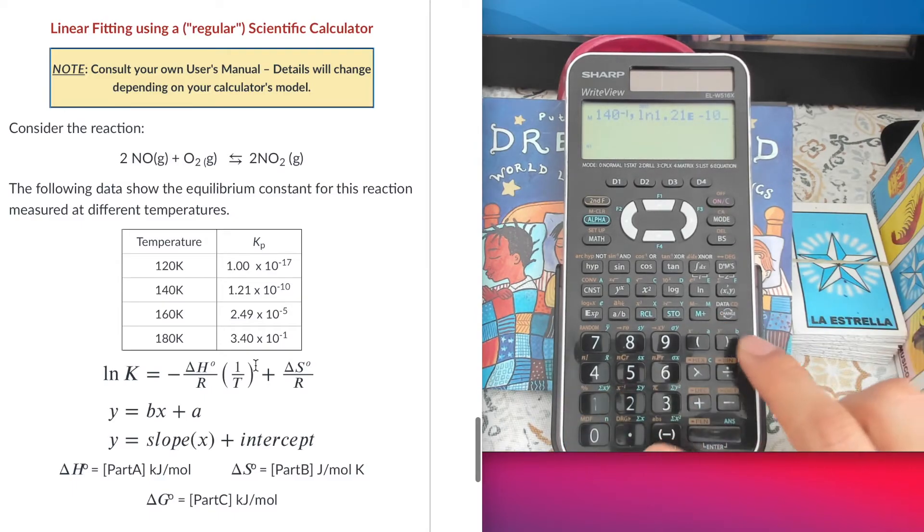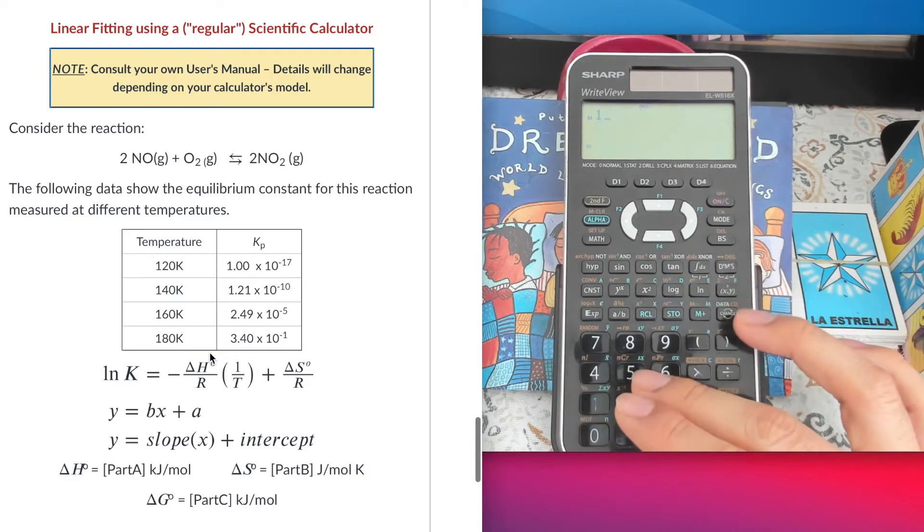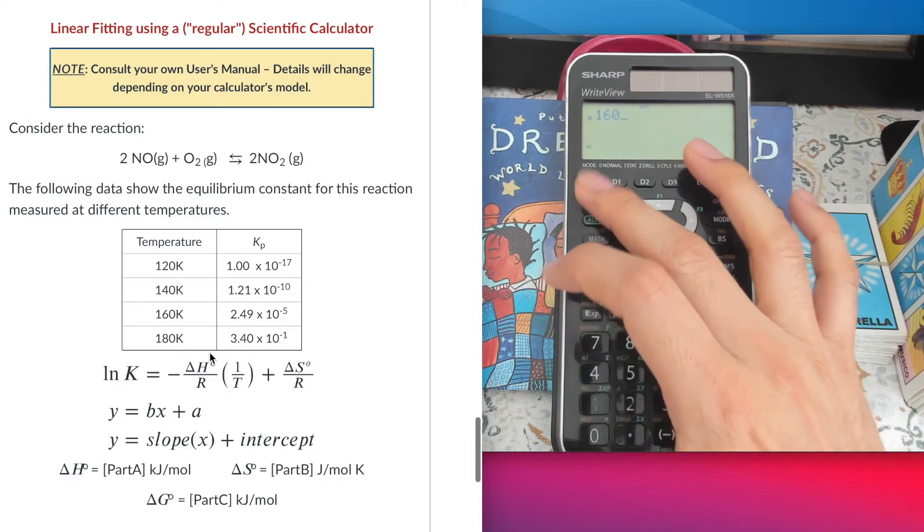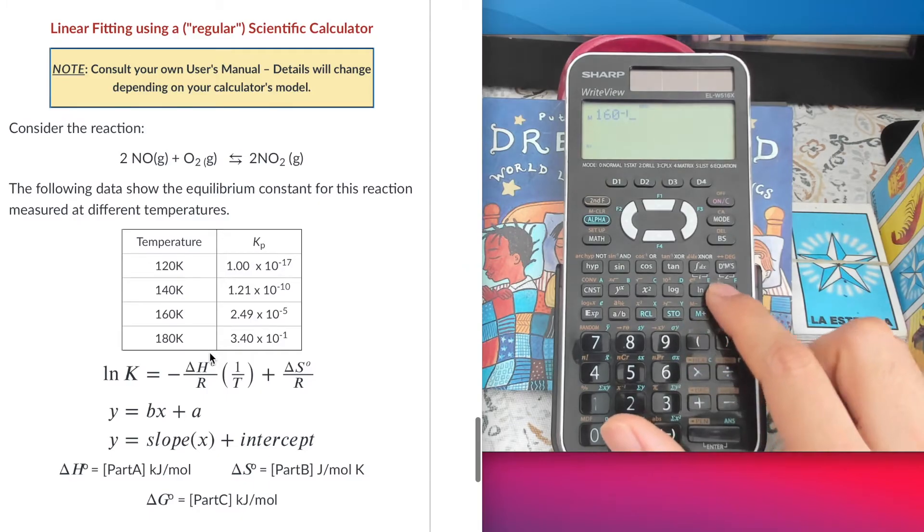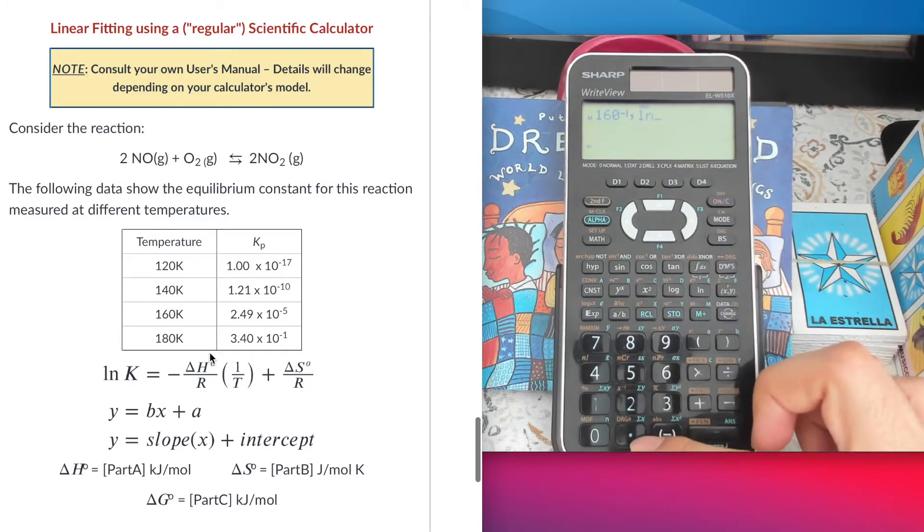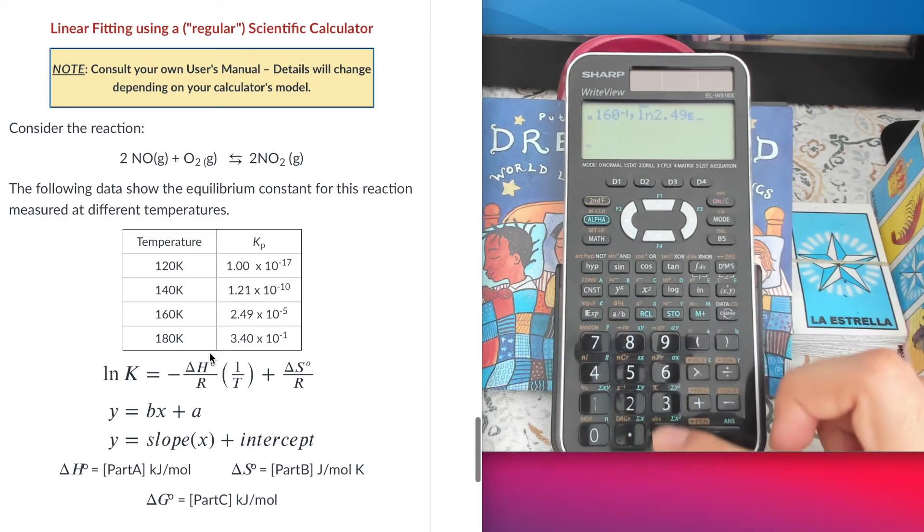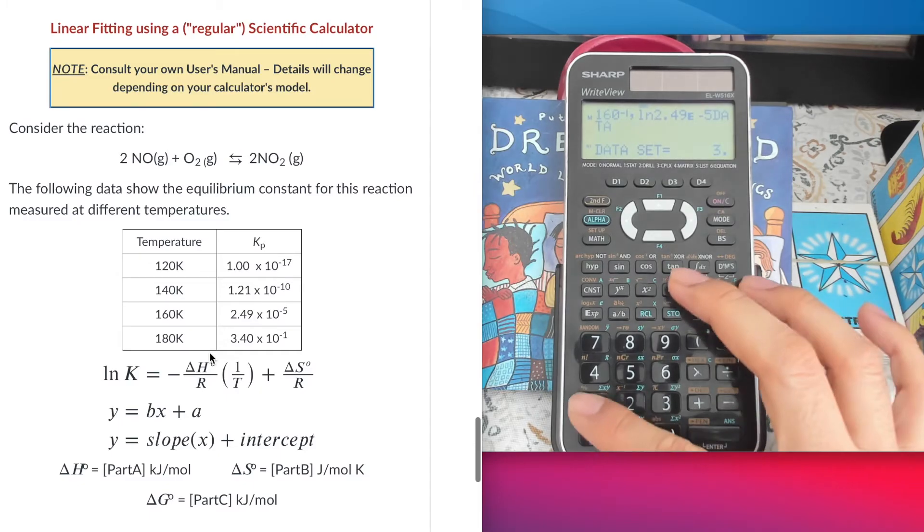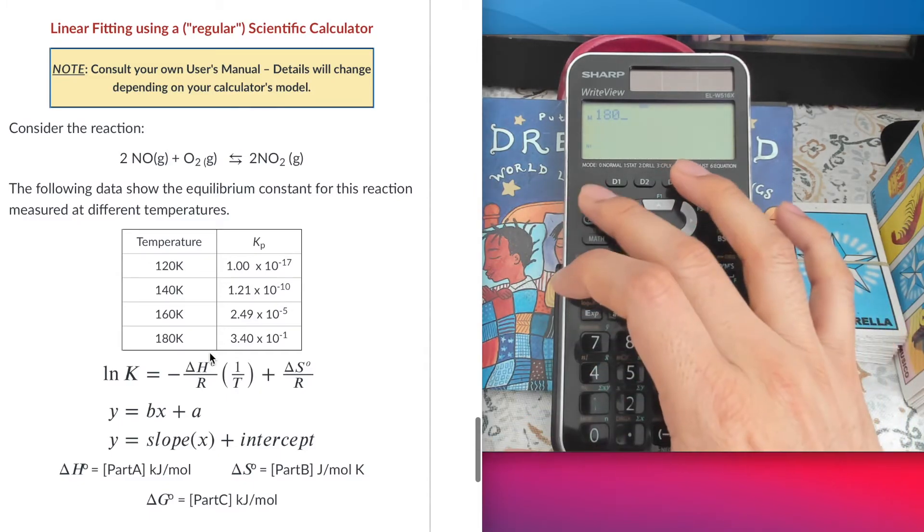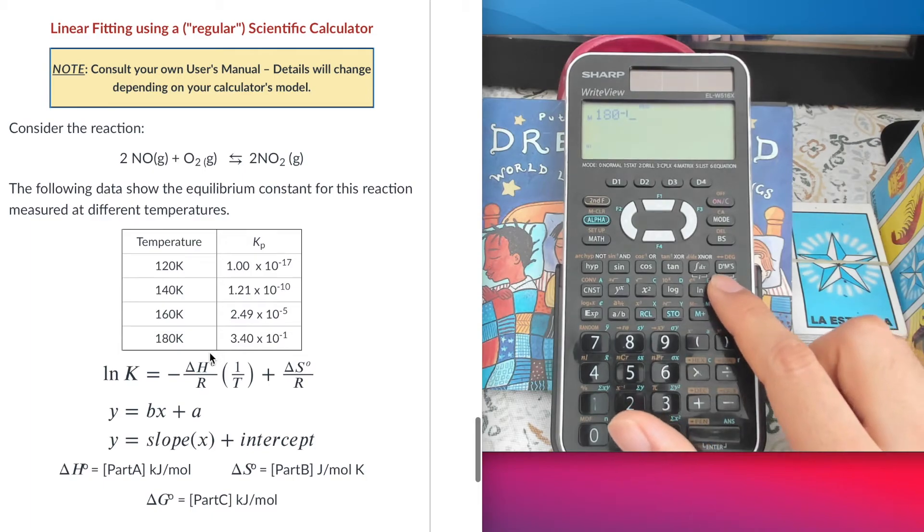I do the same for the other data points that I have on my table. So inverse of the temperature, natural log of the equilibrium constant, and I tell the calculator this is my third point. I do the same thing for each of them.